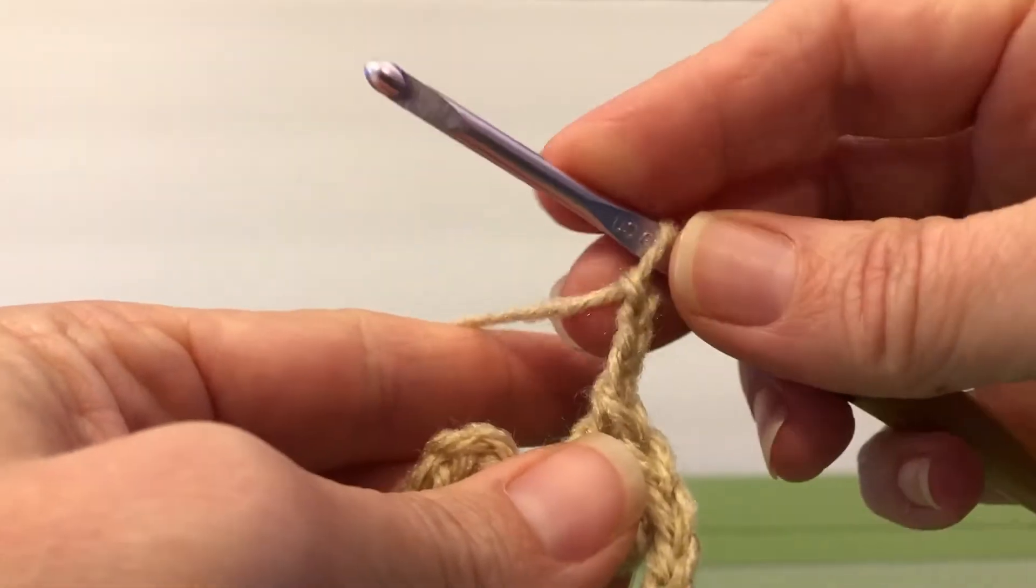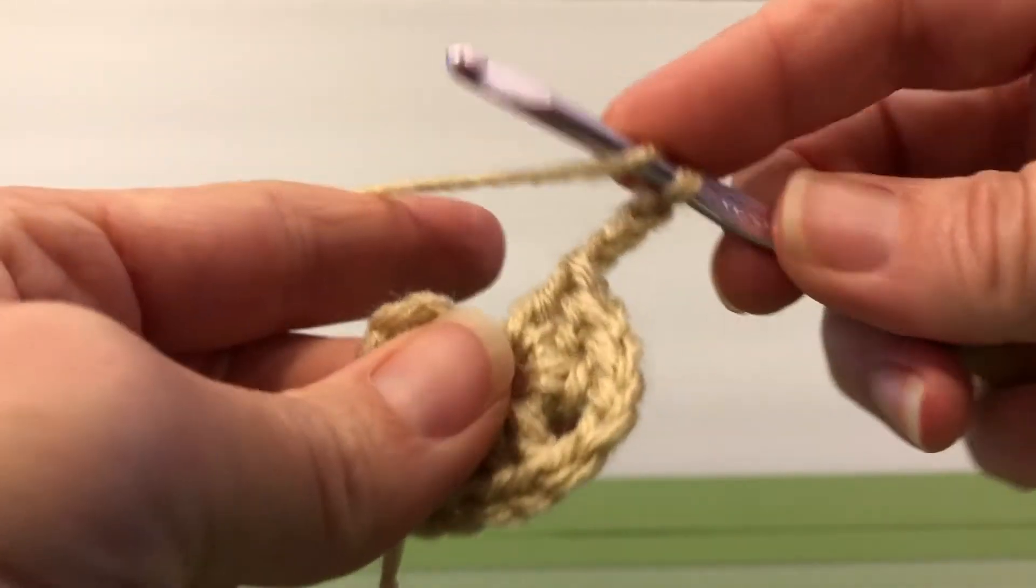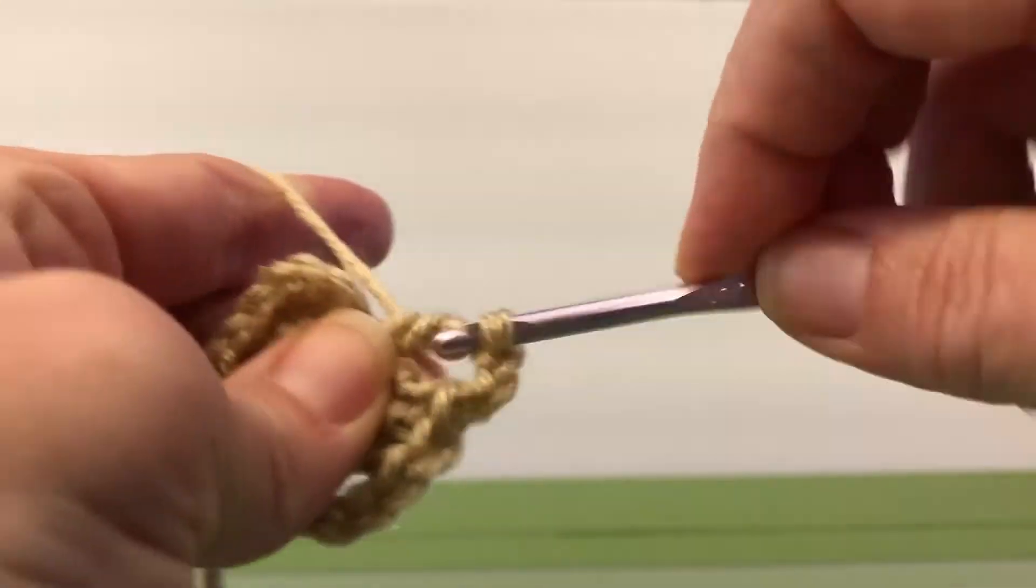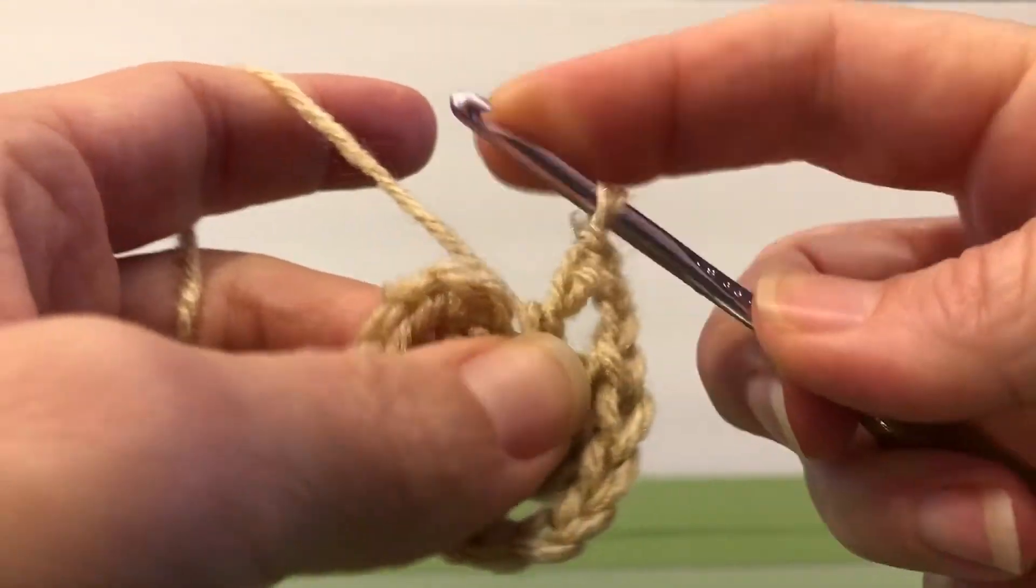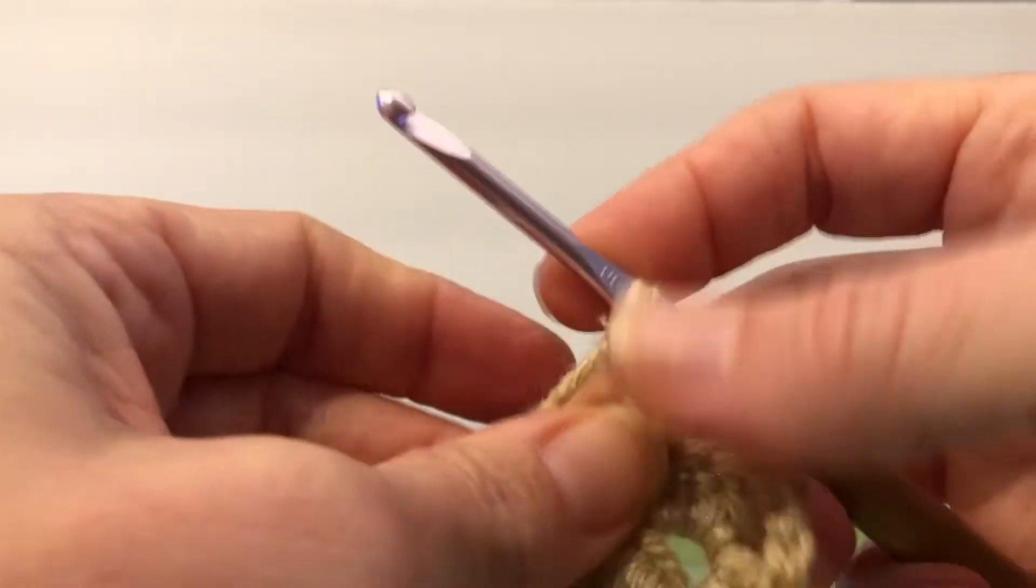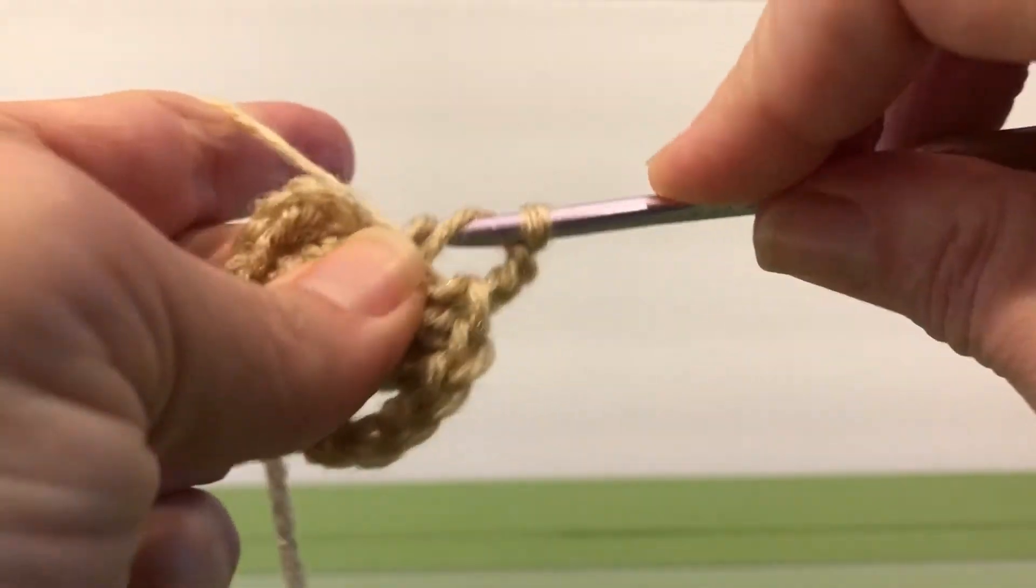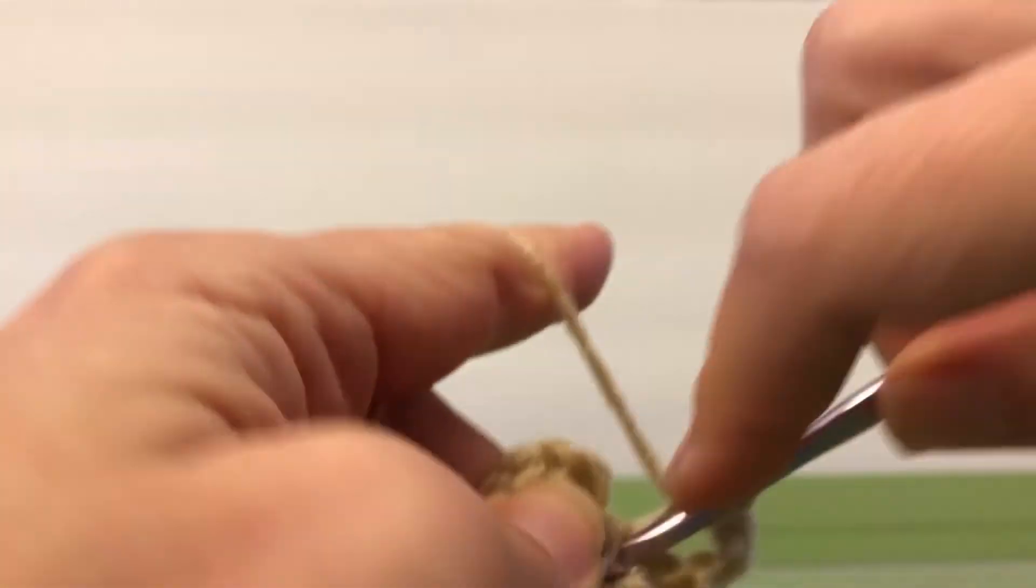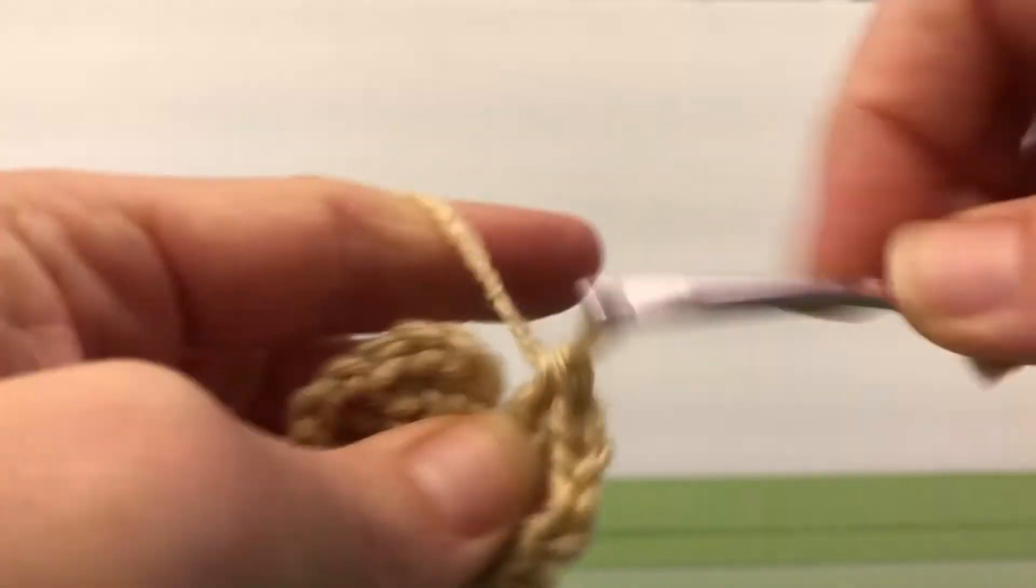This is going to be our fourth one. So in the fourth granny, same thing as before, we're going to do three double crochets. One. Oops, I got a little tied up there. Let's try that one again. One. Two. And three.